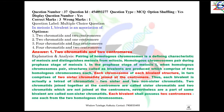Question number 37: in meiosis 1, a bivalent is an association of 2 chromatids and 2 centromeres. This is a very simple question; the entire explanation is provided here.